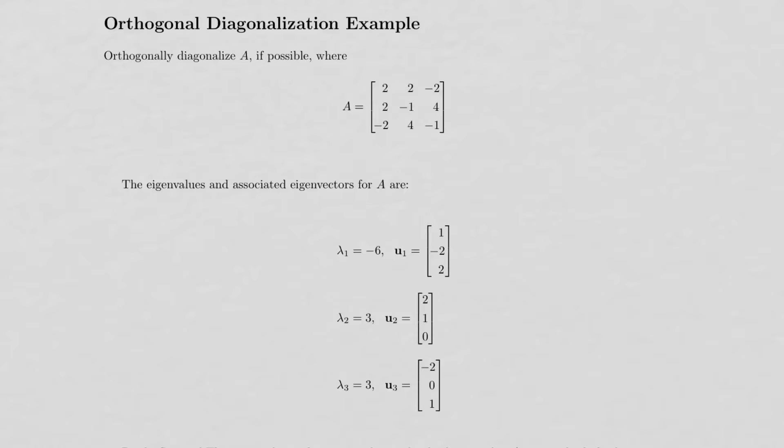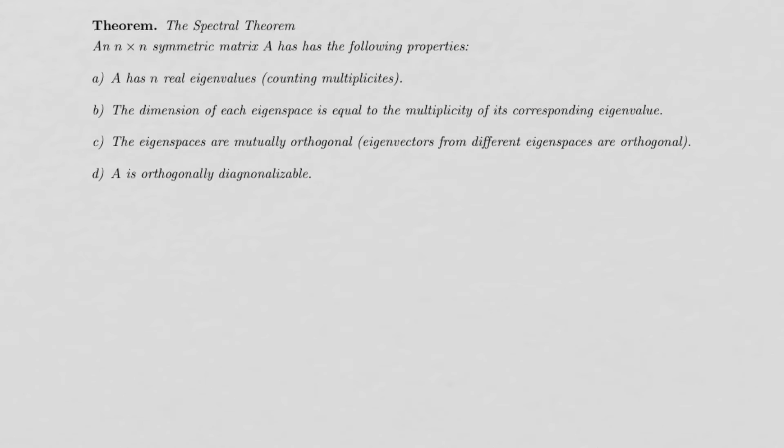If possible suggests that it may not be possible. We can take a look at the spectral theorem here really quick just to review. By the way, this is the same spectral theorem that's in the lecture notes.